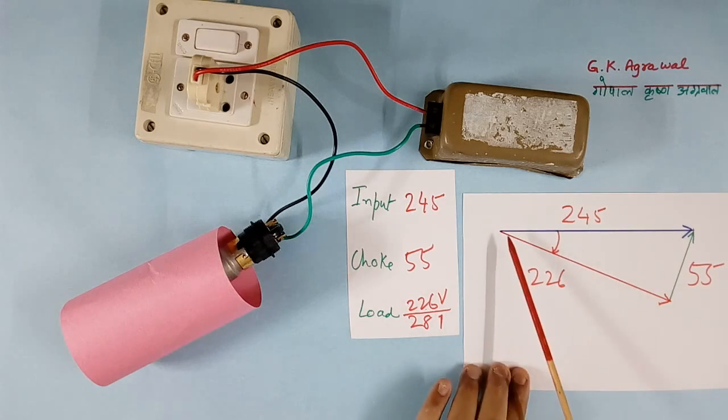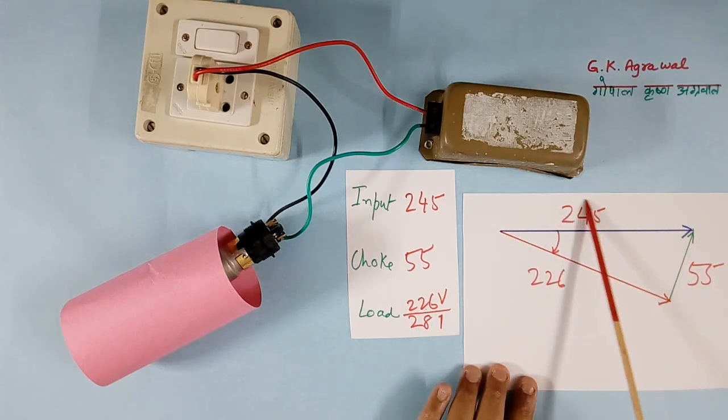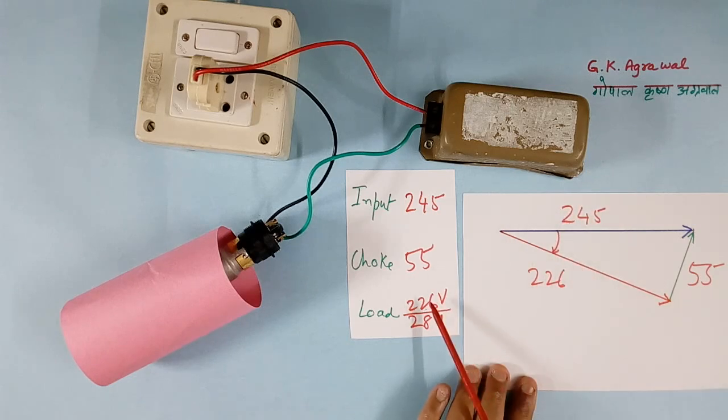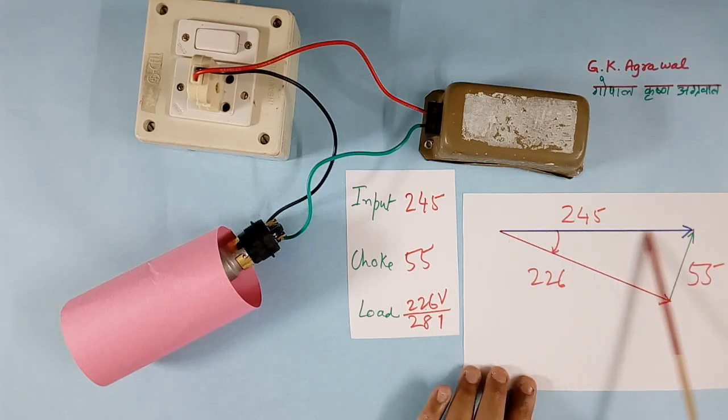So because of vector summation, this voltage will not be equal to this voltage plus this voltage in linear fashion. They have to add it in vector form. Then only you will get the correct result.